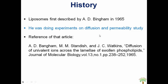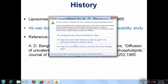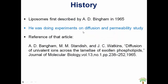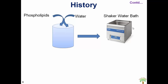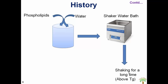The history behind liposomes tells us that a scientist Bangham was working in the 1960s experimenting on diffusion and permeability. He took phospholipids in water in a flask, then allowed that flask to shake on a water shaker butter bath for a very long period of time — like one week or seven days. Then when he applied temperature above the glass transition temperature, he observed vesicular structures, which were afterwards named liposomes.